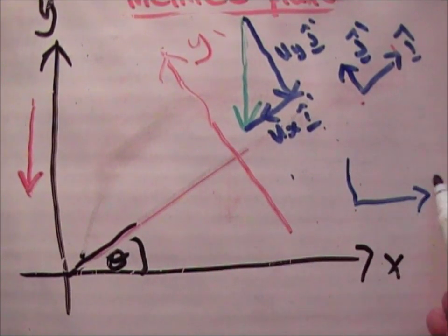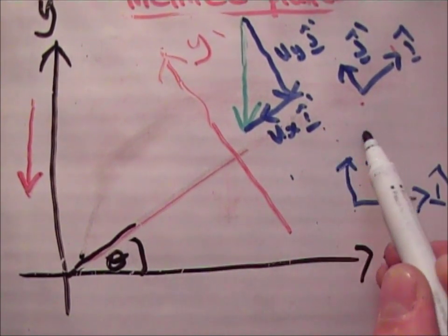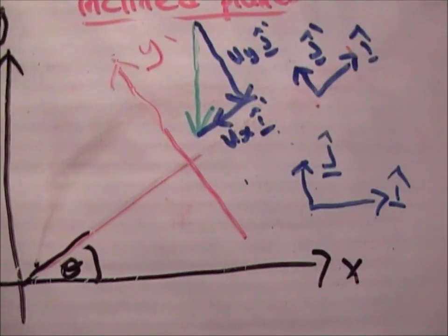Whereas down here we had this is i hat, this is j hat. We're just taking into account that we've rotated the axis.